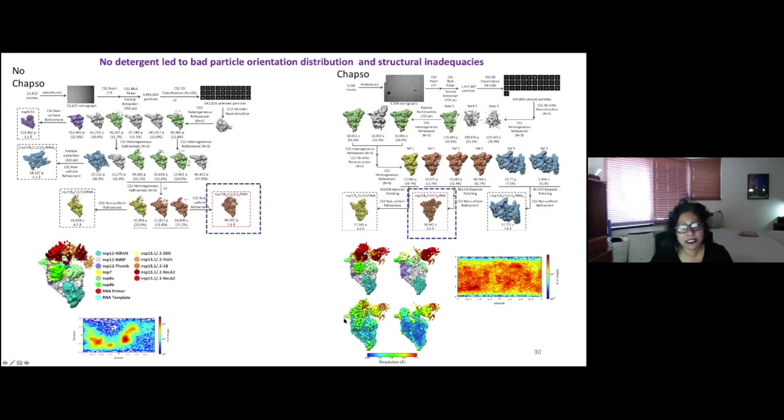And I think this is important for the non-structural biologists. The resolution isn't everything. You really need to look at the maps. And so the maps, you can just see more details and the maps, we could build it much better. And this, again, is because we are getting a more overall view of the particles in an ice when you have the detergent present.